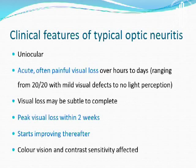Clinical features are typically uniocular and acute, presenting as often painful visual loss ranging over hours to days. There can be mild cases with just 20/20 vision. Visual loss may range from very subtle to complete, and peak visual loss usually occurs within two weeks, after which it starts improving. Color vision and contrast sensitivity are also affected, which is a good parameter for finding out whether the fellow eye is involved.